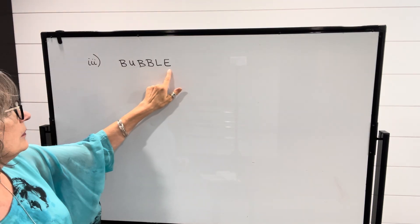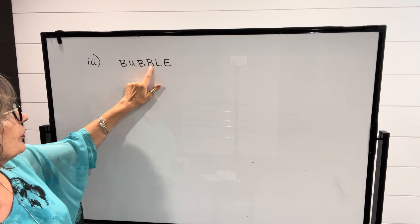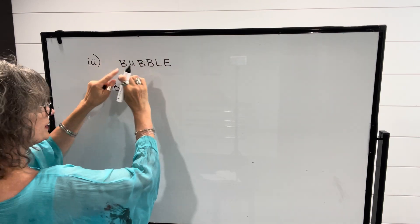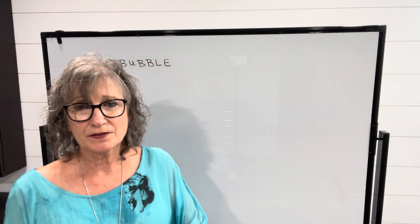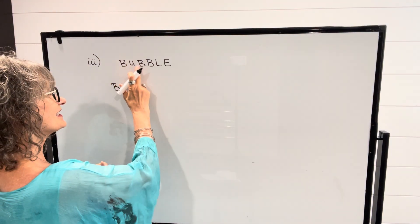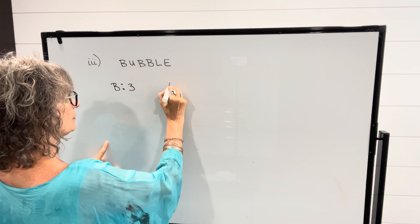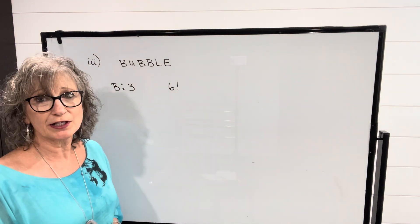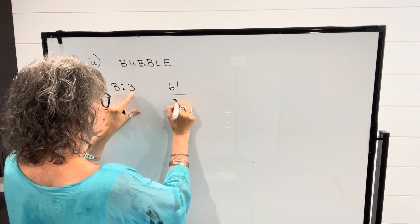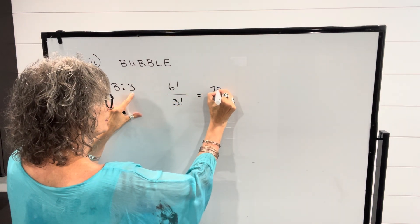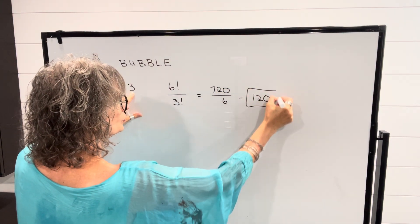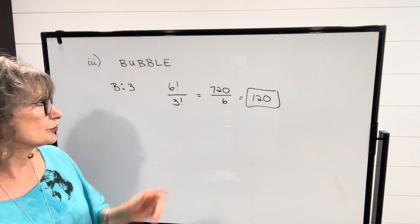If we take a look at the word 'bubble,' notice it has B appearing three times. If we exchange those B's we still have the same word, so we have to take that into consideration. If we had six distinct letters we would have six factorial different ways to arrange them, but because B is repeated three times we divide by three factorial. So we have 720 divided by 6, which is 120 different ways to arrange those letters.